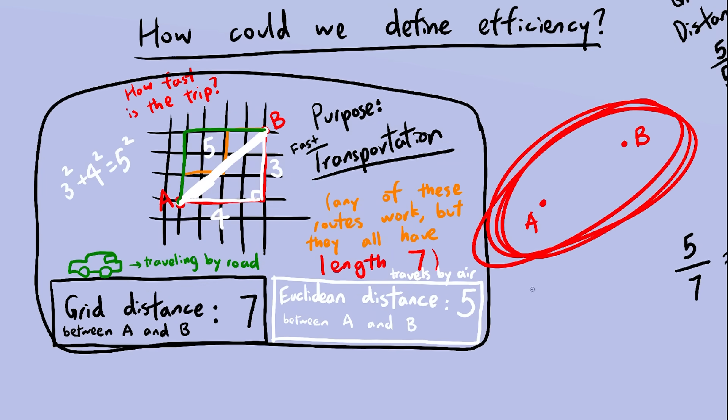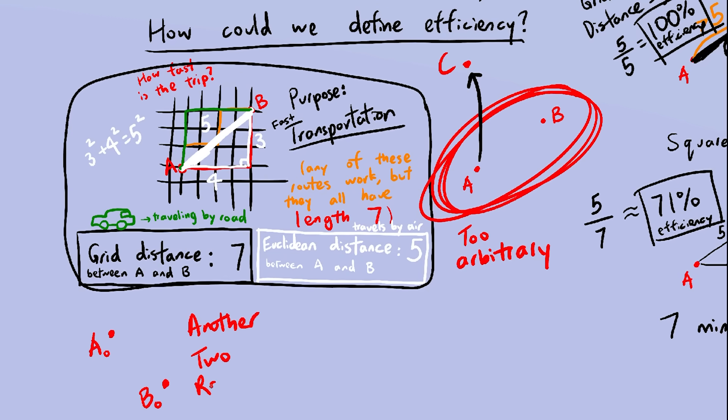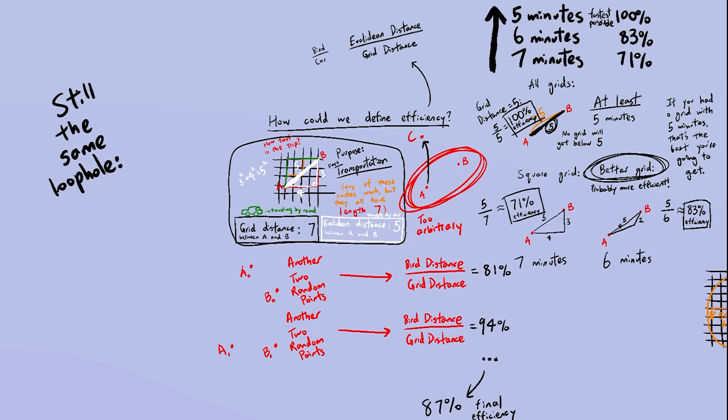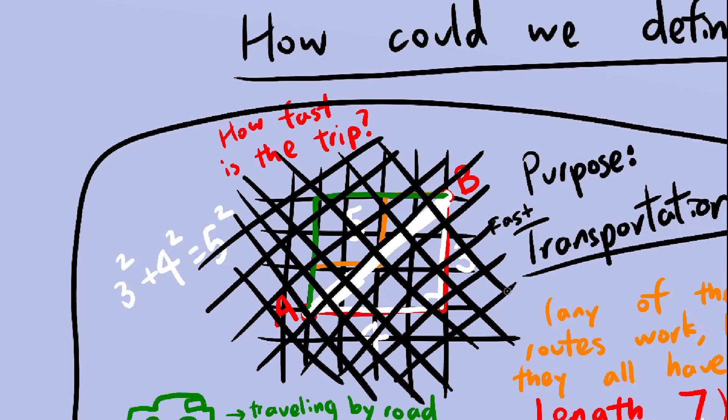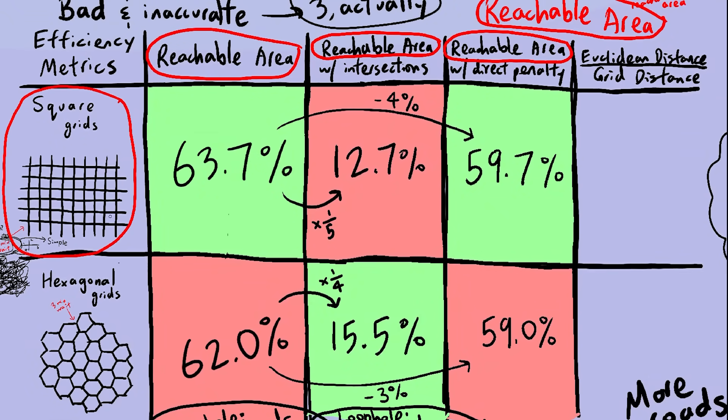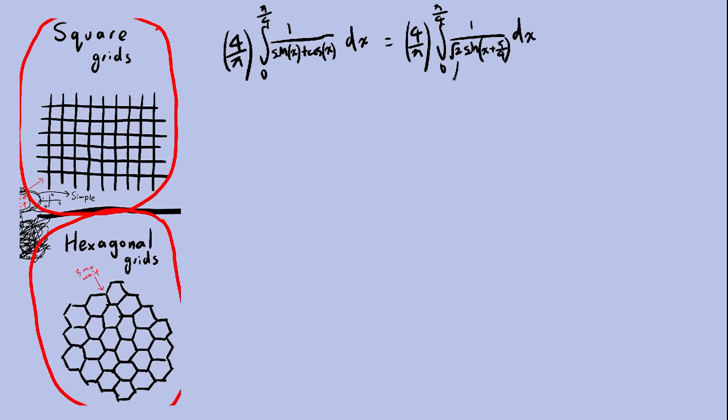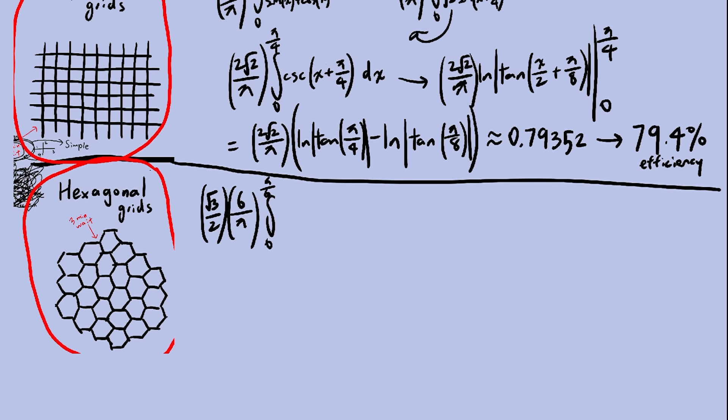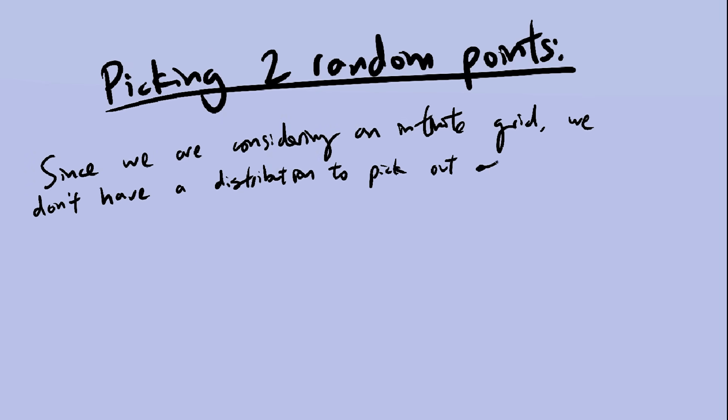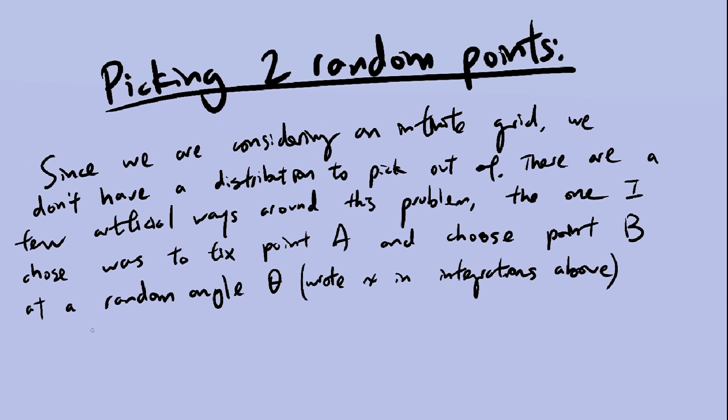One more thing. We can't just measure efficiency off of these two points because of course, there are other places in the city that we also need to get to. So what we'll do is pick another two points and run the same calculation again, Euclidean distance over grid distance. And we just keep doing this and we average out everything at the end to get our final efficiency score. By the way, this method does have a loophole. Just like with reachable areas, you can add in a bunch of roads to increase the efficiency. So let's just ignore every other grid besides square and hexagonal and only compare these two. Once again, I'm going to spare you the calculations. I tend to skim over calculations on this channel because I don't find them as interesting, but you're free to try them out yourself, of course. And let me know if I made a mistake.